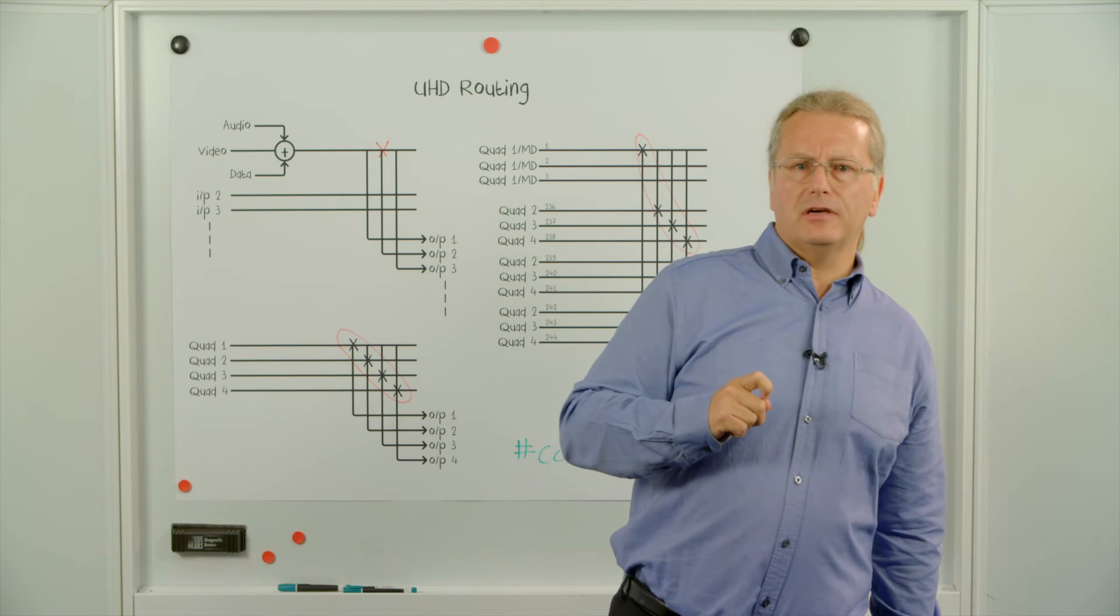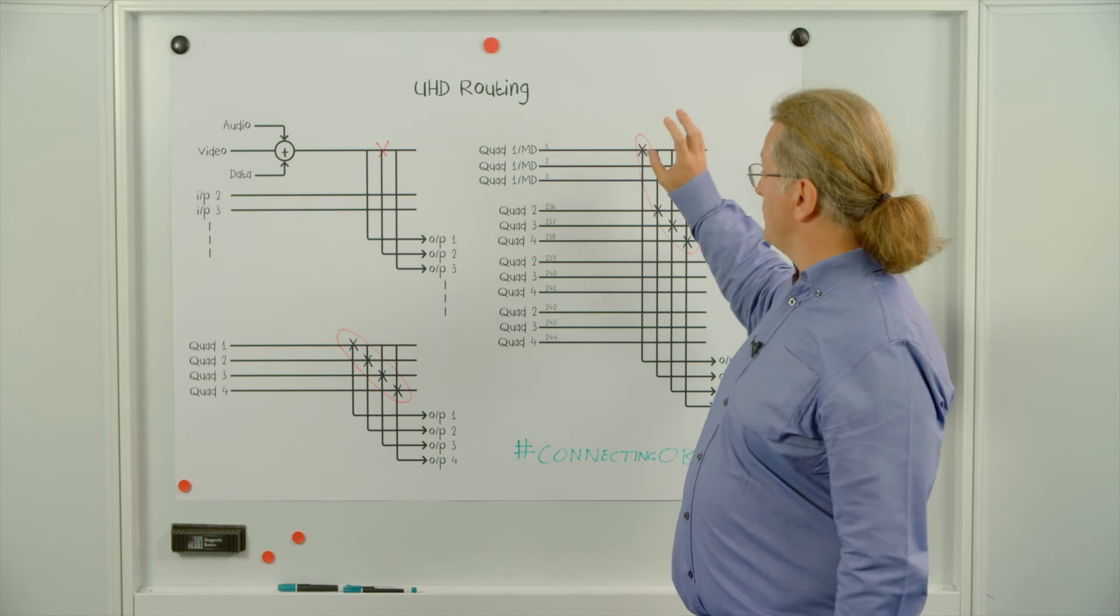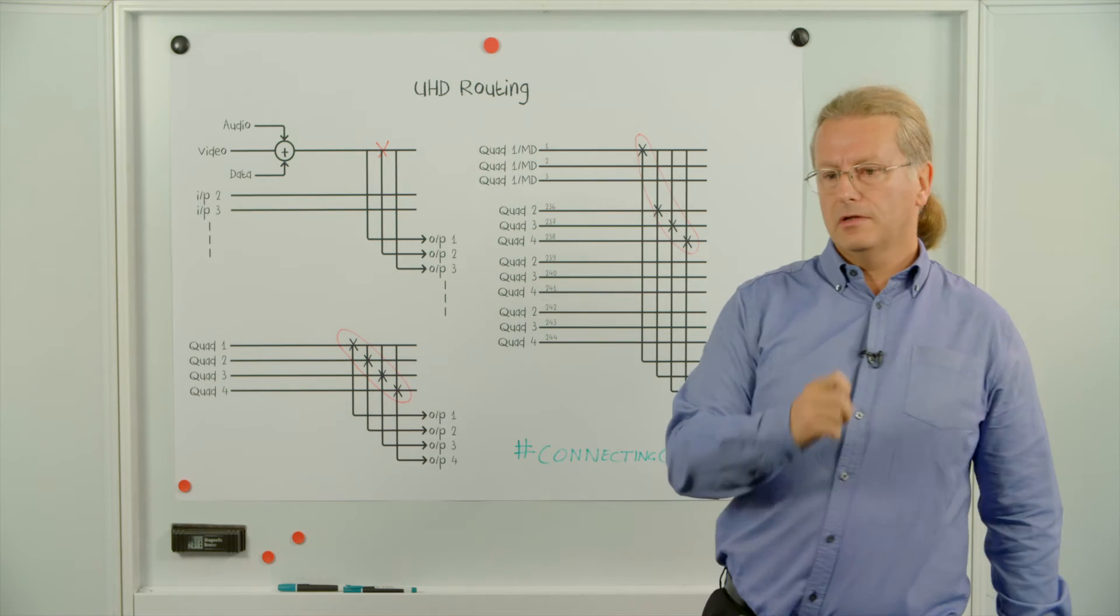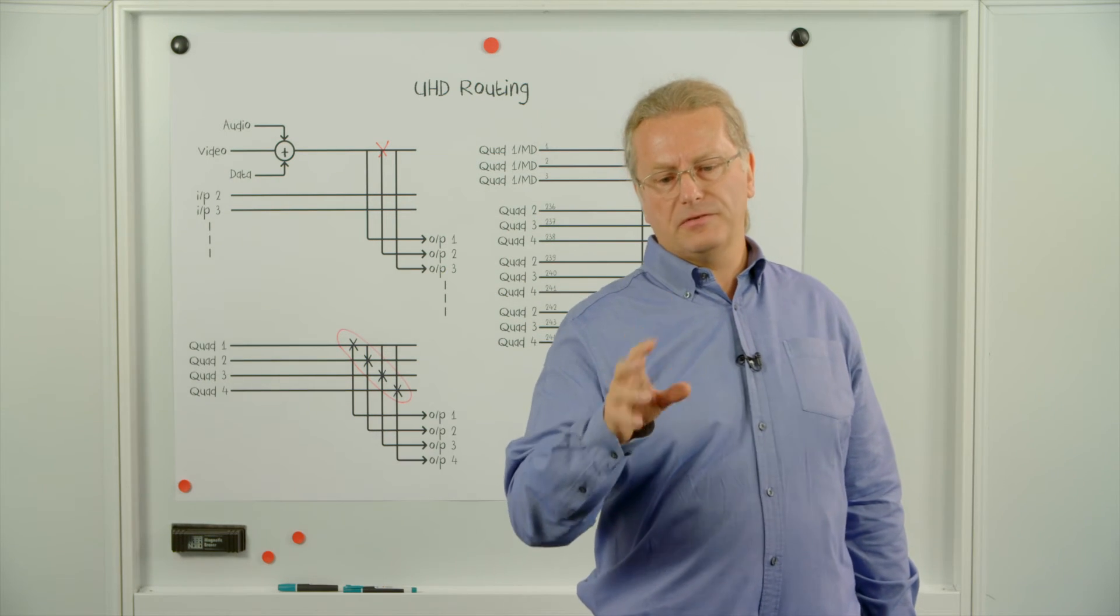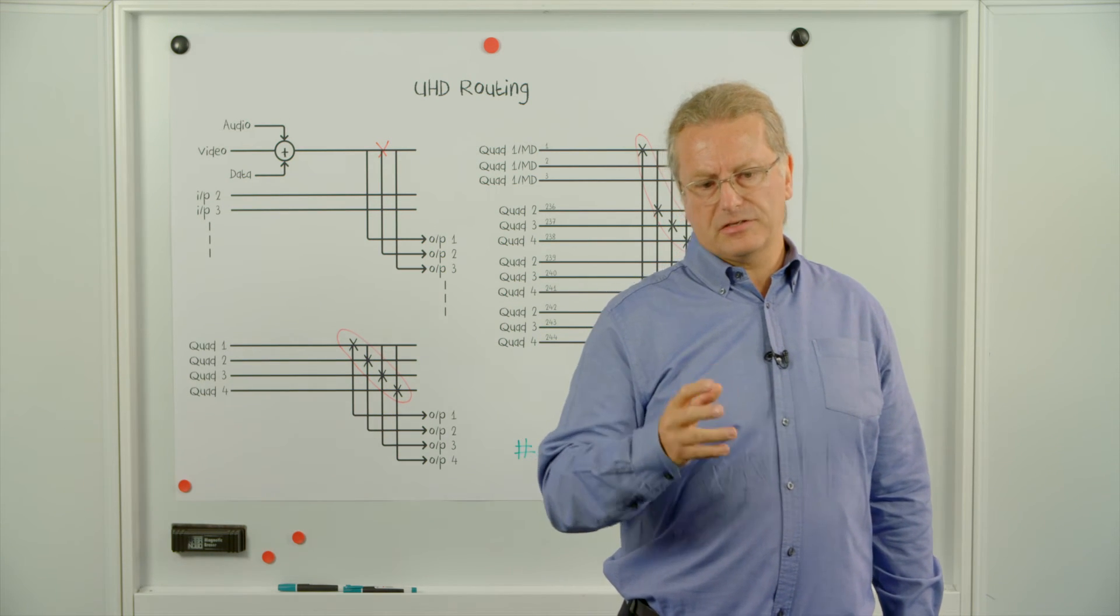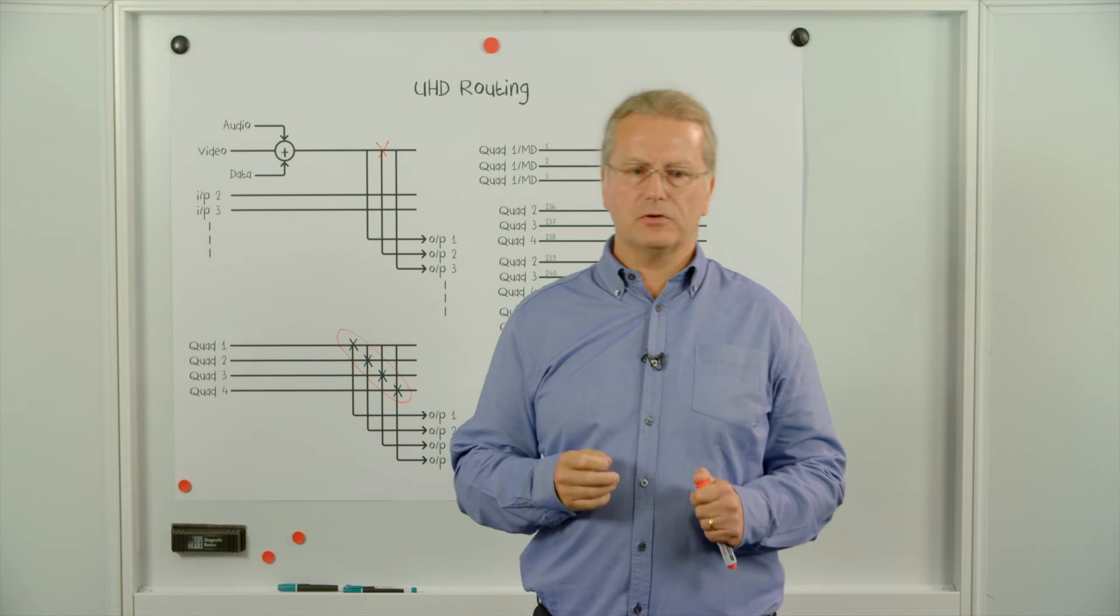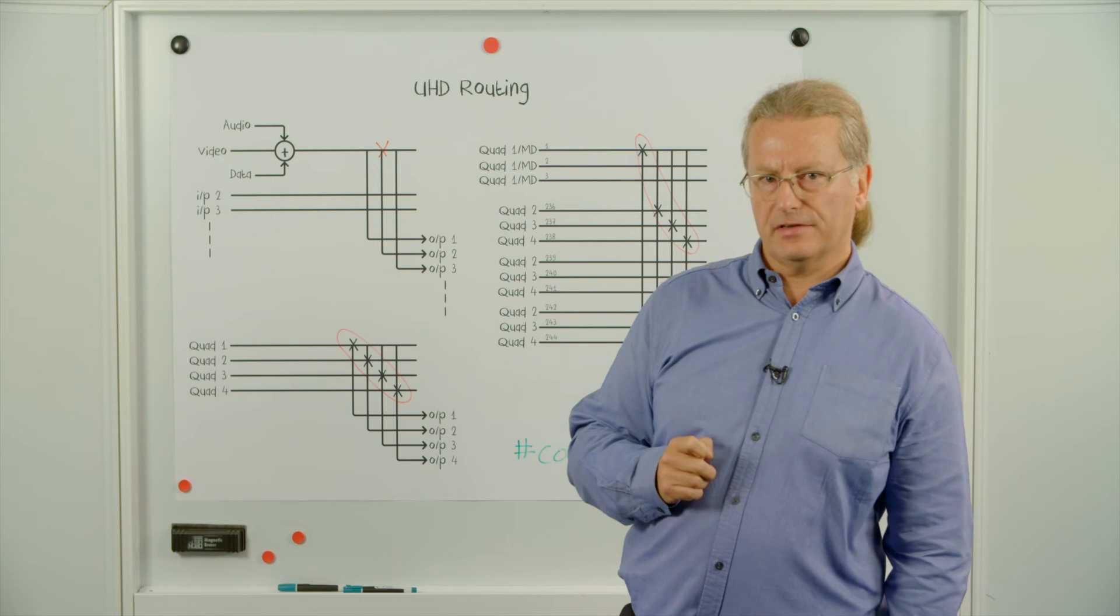As I mentioned earlier, not all OBs run UHD all the time. They make HD productions. And so therefore, the interface to the users shouldn't be different between UHD and HD. As an example, camera one in either version should still be called CAM1 on their user interface.